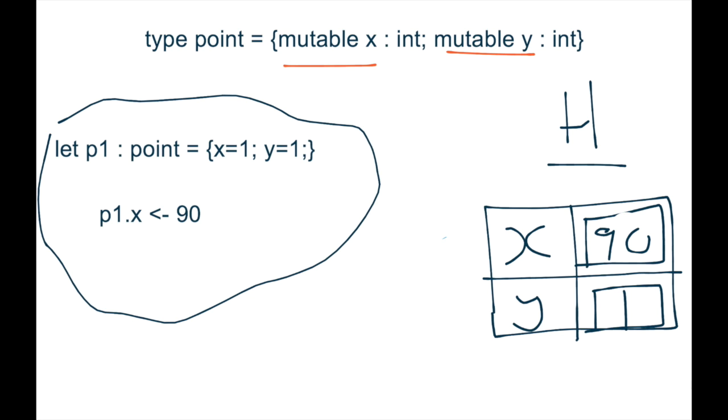Let's also just review how you would read something like this in English. Let p1, which is a point, be a record, a point with x equals 1 and y equals 1. And then later, you say give p1.x 90, because it's of type unit, it's doing something.